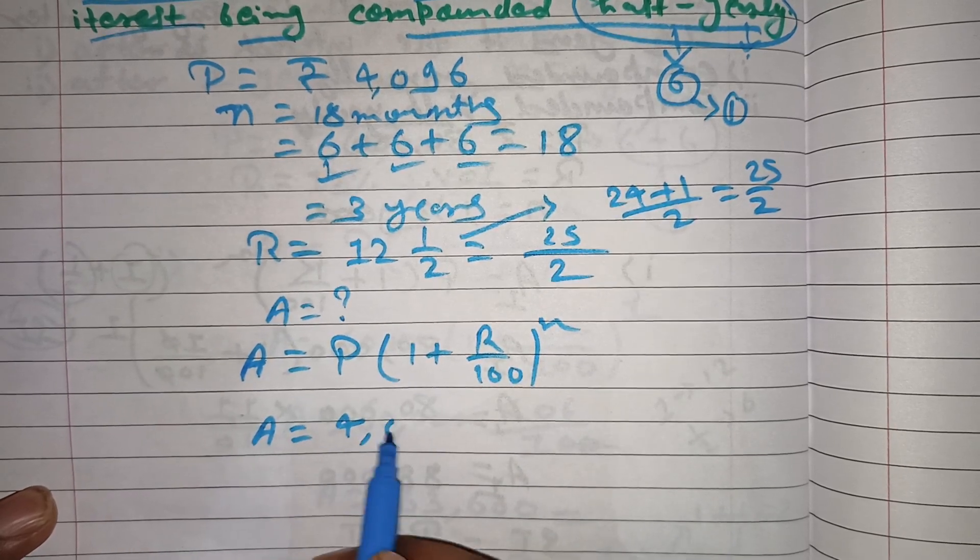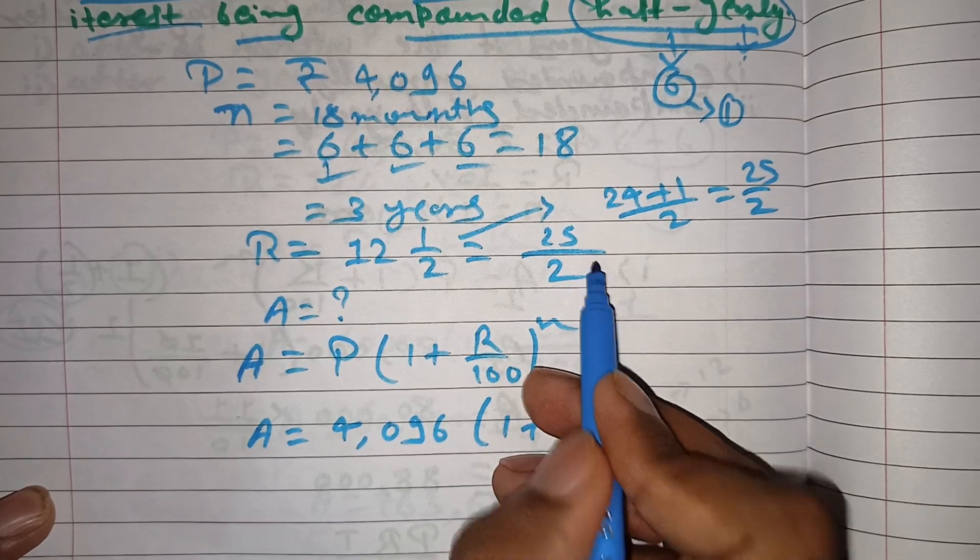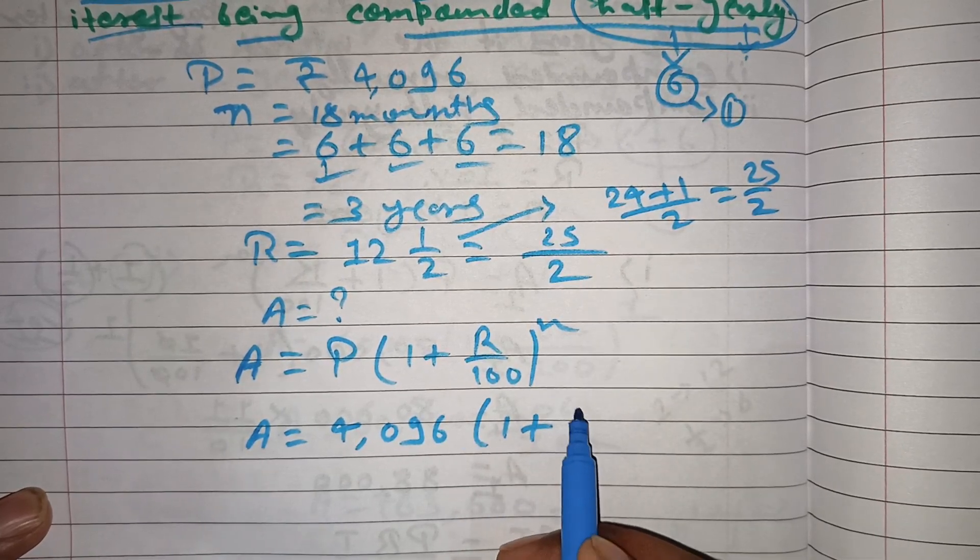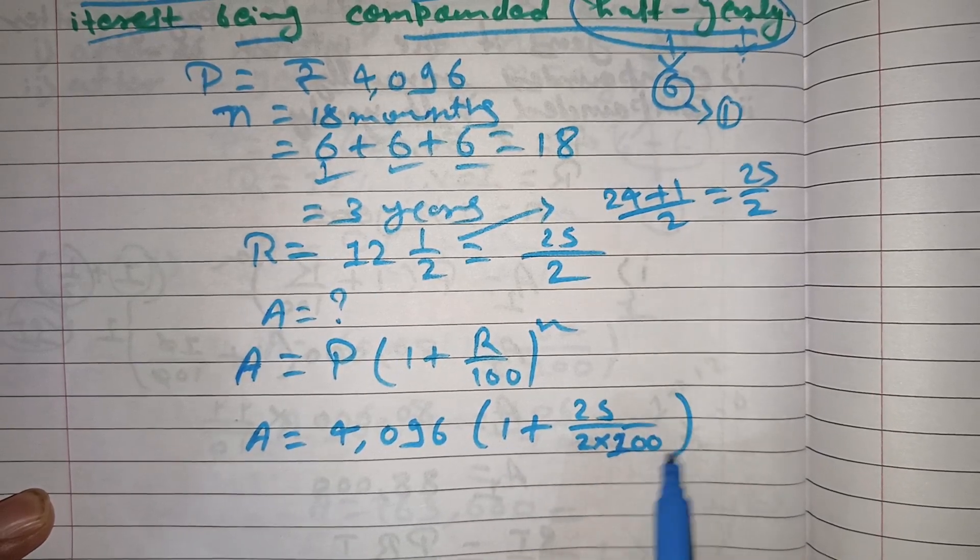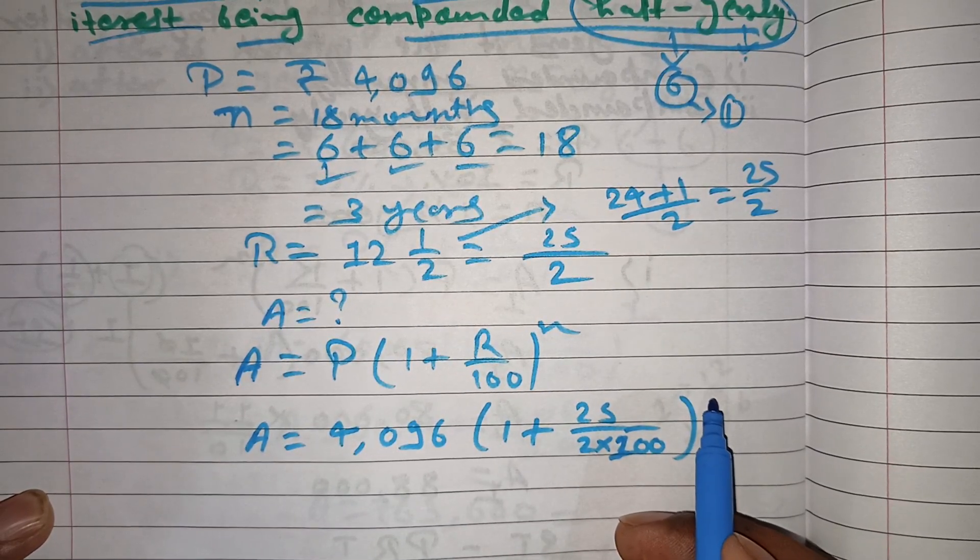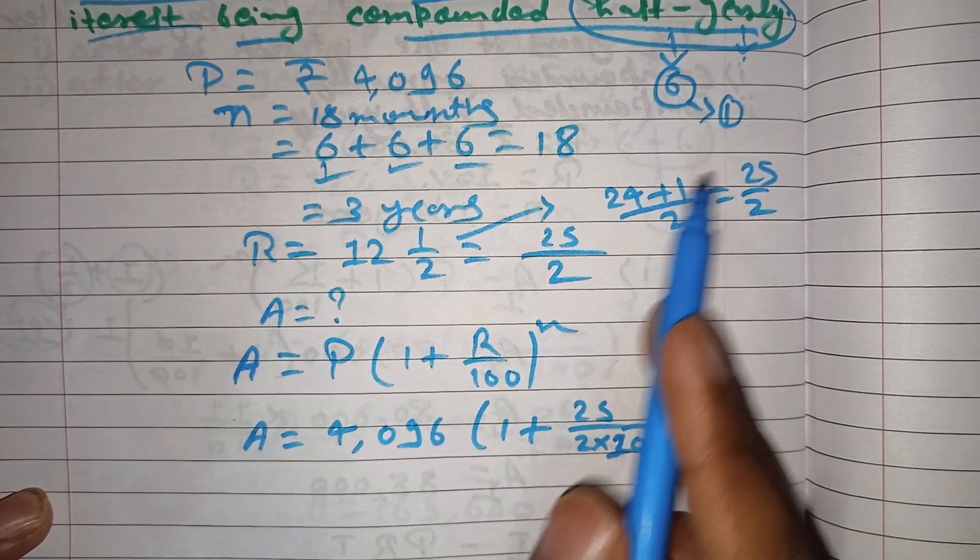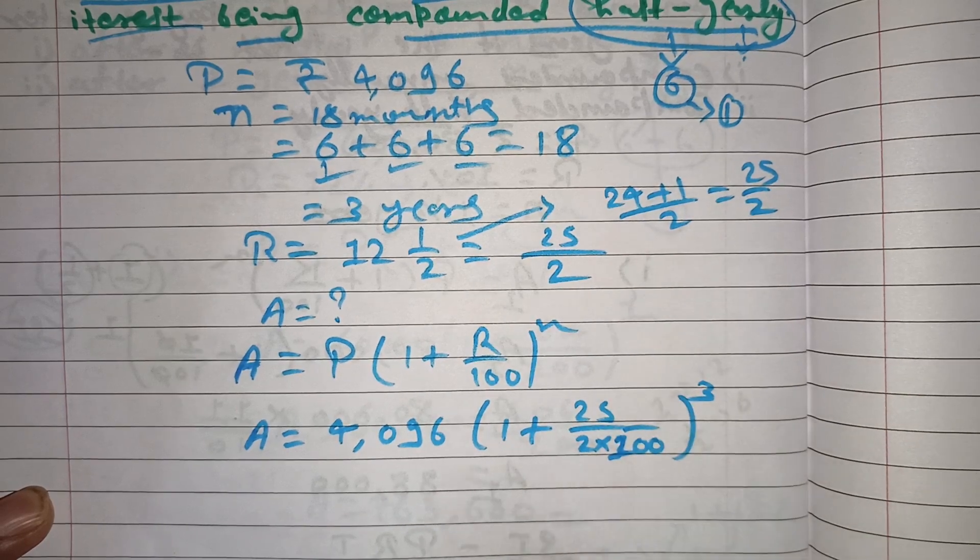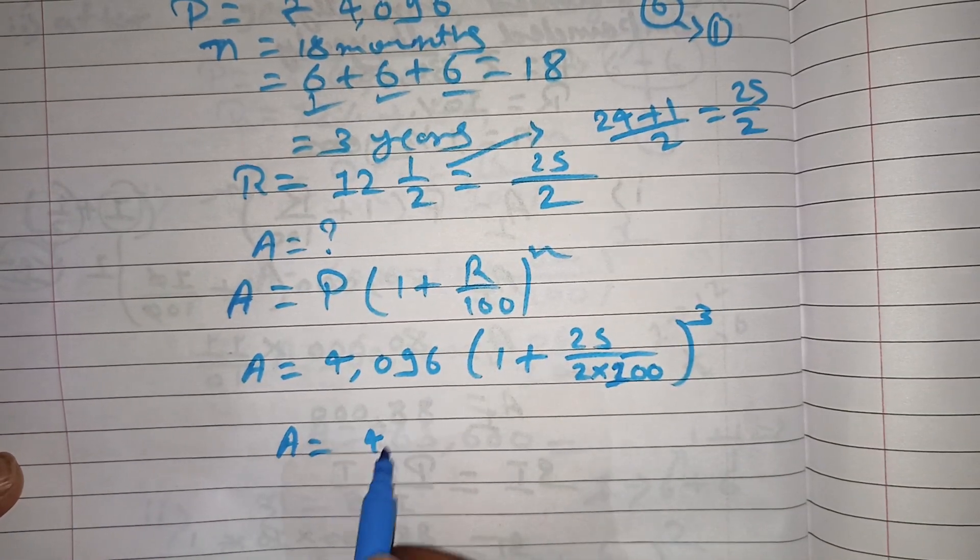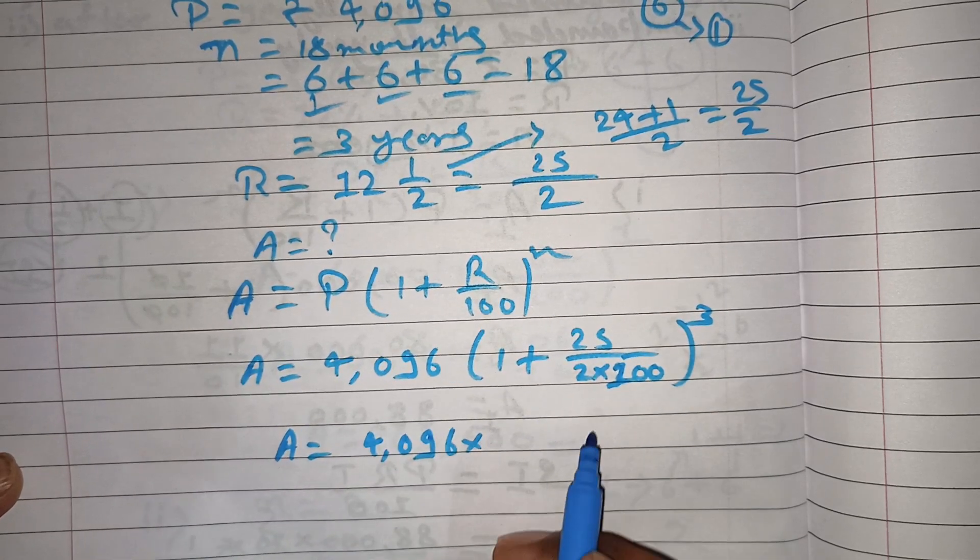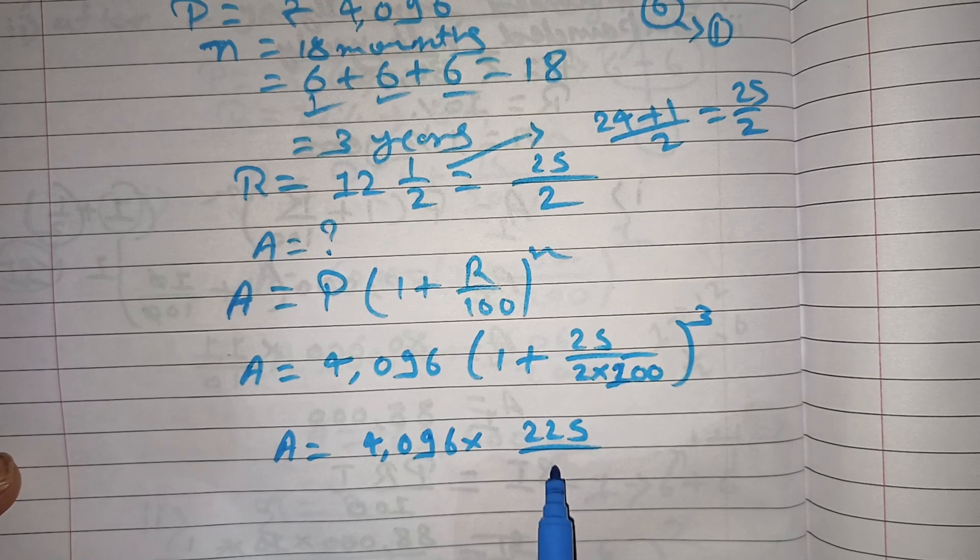Principal amount 4096 rupees, 1 plus rate half yearly 25 by 2 divided by 100. This simplifies to 4096 times (225 by 200) to the power 3.